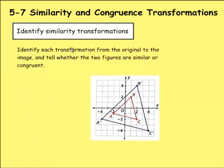First it says identify each transformation from the original to the image and tell whether the two figures are similar or congruent. The original is the one without the little ones by it here. So I can plot out these points of A, B, and C, and then plot out A1,